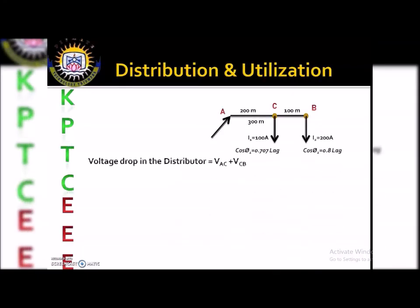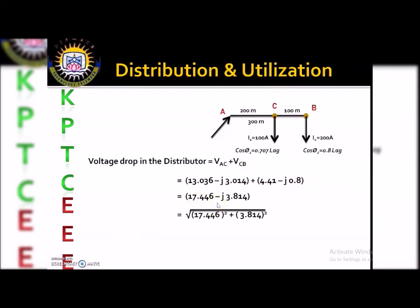Finally, total voltage drop = V_CB + V_AC. Adding the real and imaginary parts gives the total in rectangular form. Converting from rectangular to polar form (magnitude), we calculate the magnitude as √(17.2² + ...) and get the total voltage drop = 17.86 volts. That is the answer.